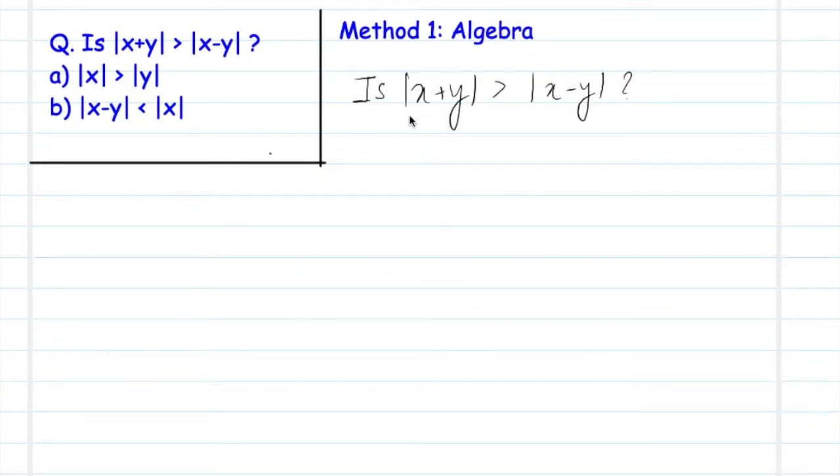We will start by looking at the question statement and try to see if we can simplify it. So the question is asking is absolute value of x plus y greater than absolute value of x minus y. Left hand side is positive and right hand side is also positive. So we can easily square them. Now x plus y whole square is same as mod of x plus y square because both are positive quantities and a square is a square.